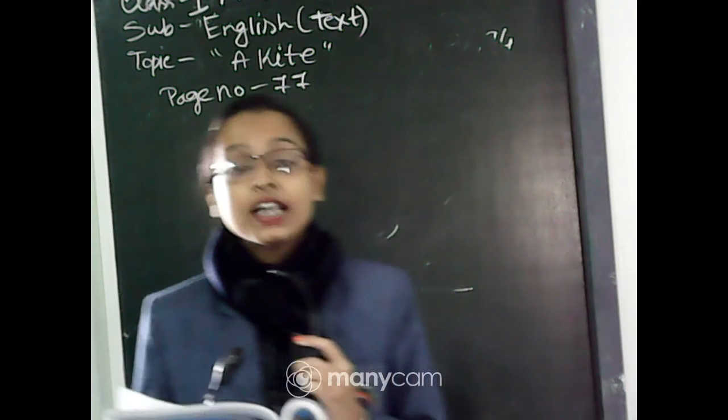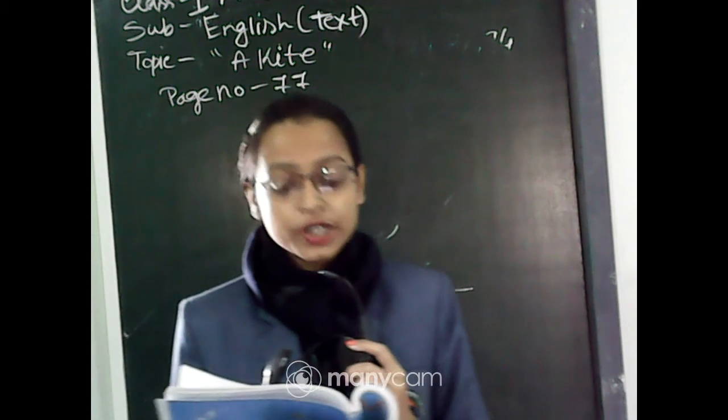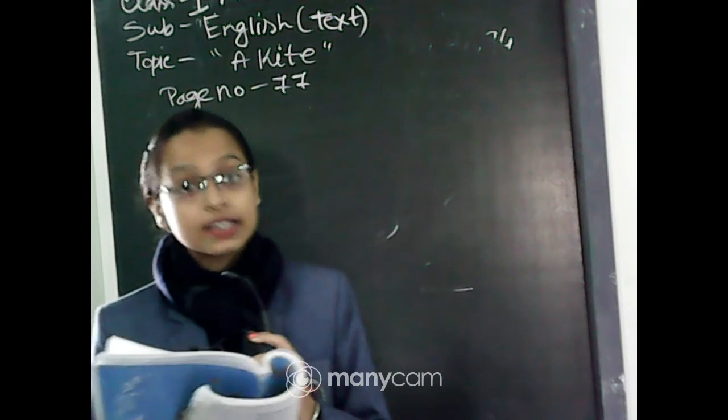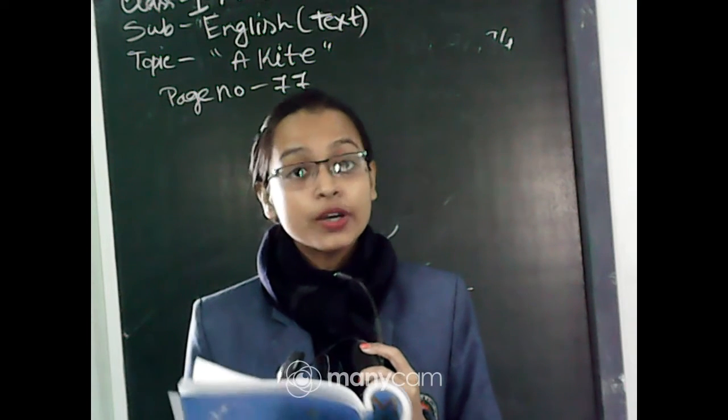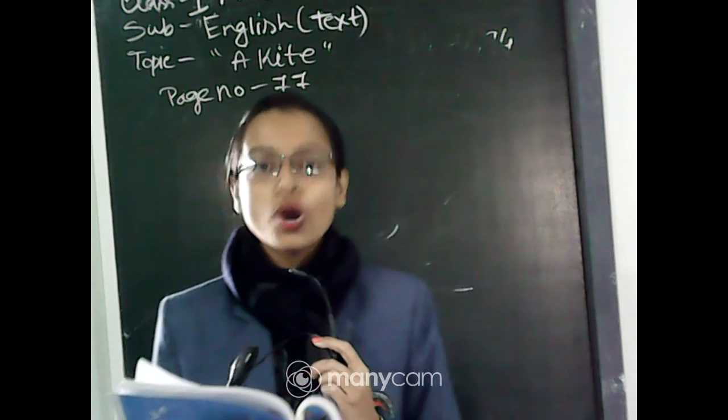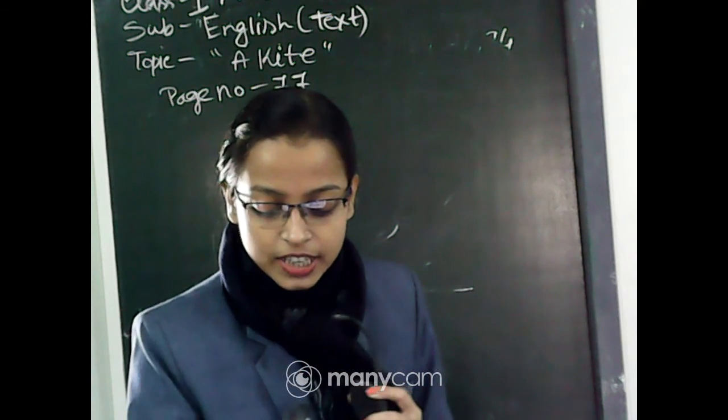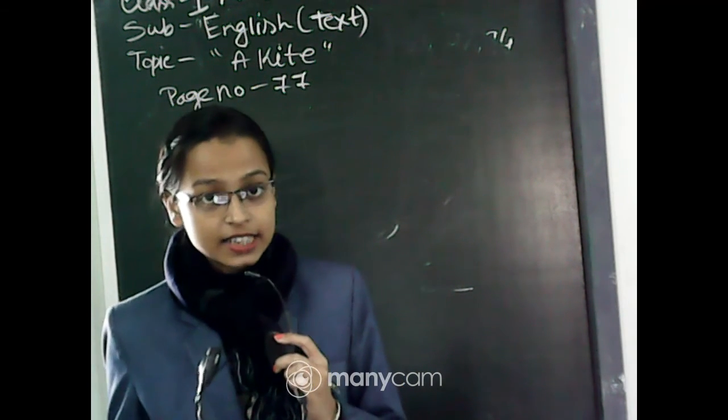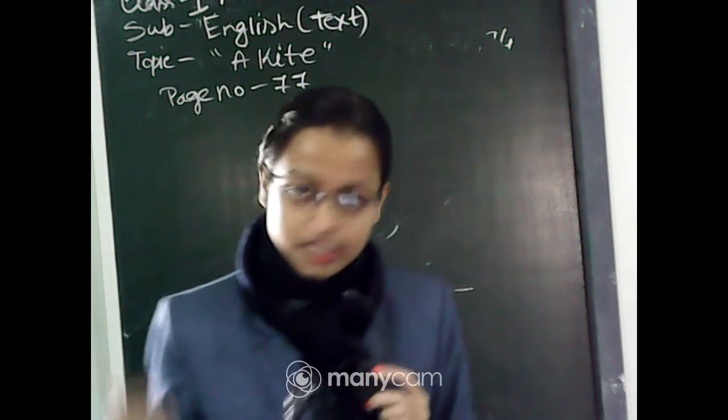So in this class, I have just read the chapter. This is a very short one. Let's read once again: 'I often sit and wish that I could be a kite up in the sky and ride upon the breeze and go whichever way I chanced to blow.' So I have just read the chapter, and in next classes I will do the spelling and other exercises from this chapter.